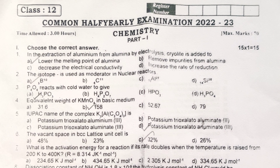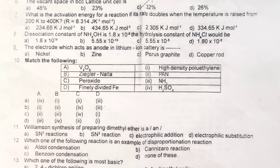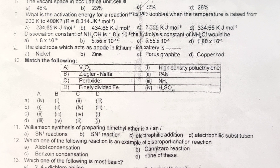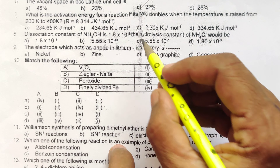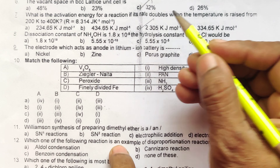Question No. 7: What is the activation energy for a reaction if its rate doubles when the temperature is raised from 200K to 400K? The correct answer is Option C.